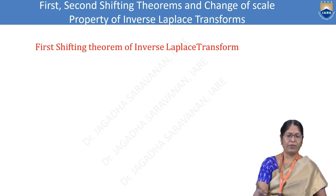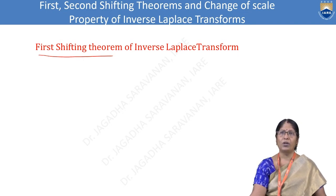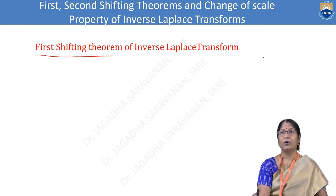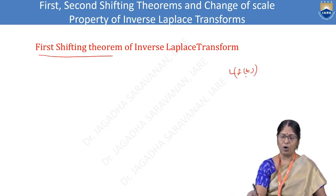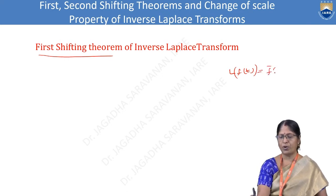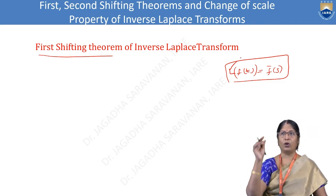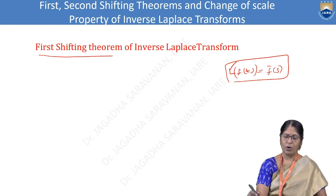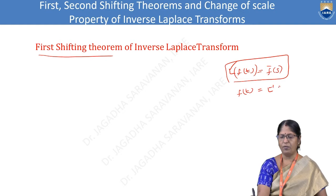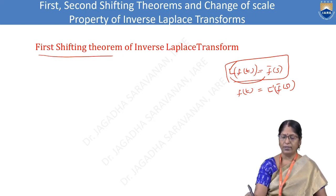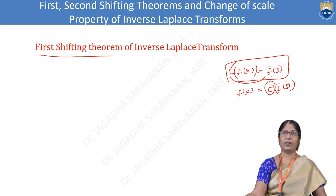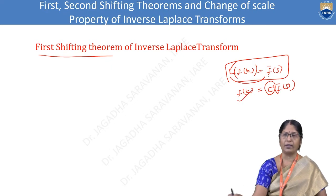First, we will concentrate on the first shifting theorem of inverse Laplace transform. Before that, we know that L{f(t)} — this notation we read as the Laplace transform of f(t) — is nothing but f̄(s). Capital L plays the role of the Laplace transform operator. Now we can write f(t) = L⁻¹{f̄(s)}, where L⁻¹ is the inverse Laplace operator.